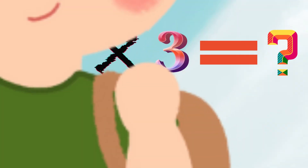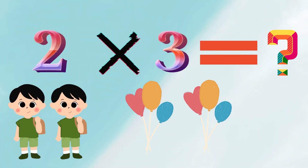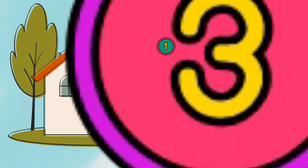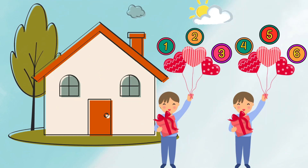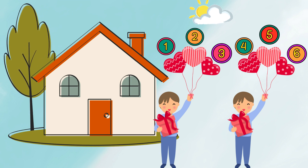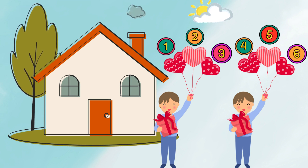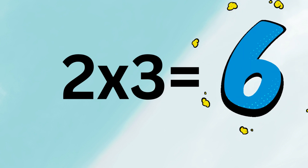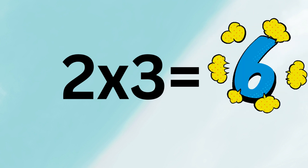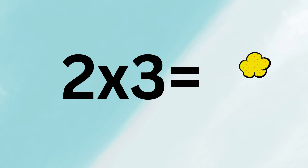Kids, let's have an example: what comes after 2 multiplied by 3? Let's suppose 2 denotes 2 boys and 3 denotes having 3 balloons each boy. Kids, you can see both boys having 3 balloons in their hands. Let's count together all balloons in total: 1, 2, 3, 4, 5, 6. Kids, total balloons are 6. So the answer of 2 multiplied by 3 is 6.